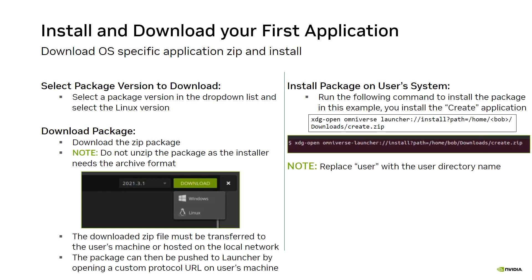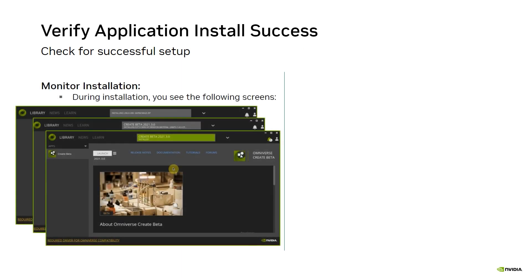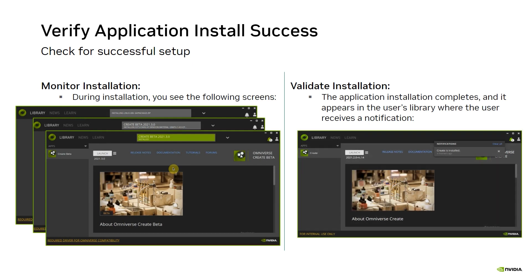Now that you've started the installation of the Create application, the next step is to validate that it was successfully installed and shows up in the Enterprise Launcher. Monitor the installation progress via the status bar at the top of the Enterprise Launcher. When the installation is completed, the package will appear in the library and you'll receive a notification at the top right-hand side of the screen. Congratulations — you've installed your first app using the Enterprise Launcher. The process is the same for any application.